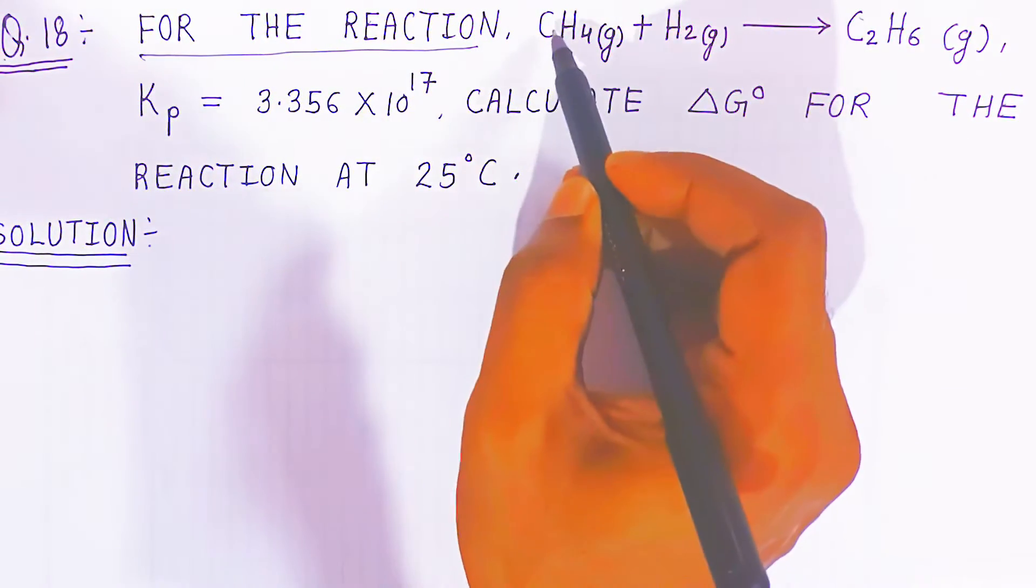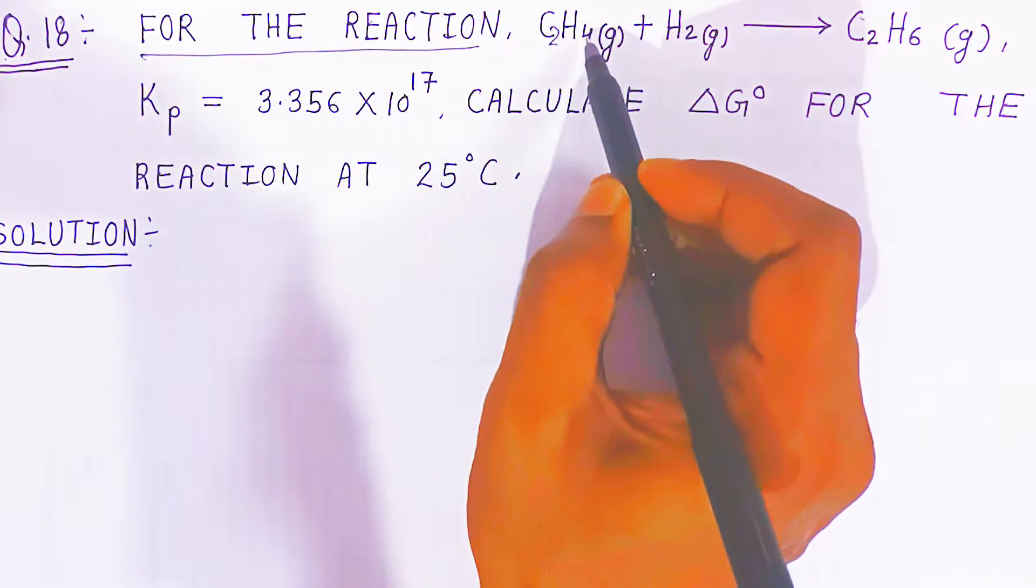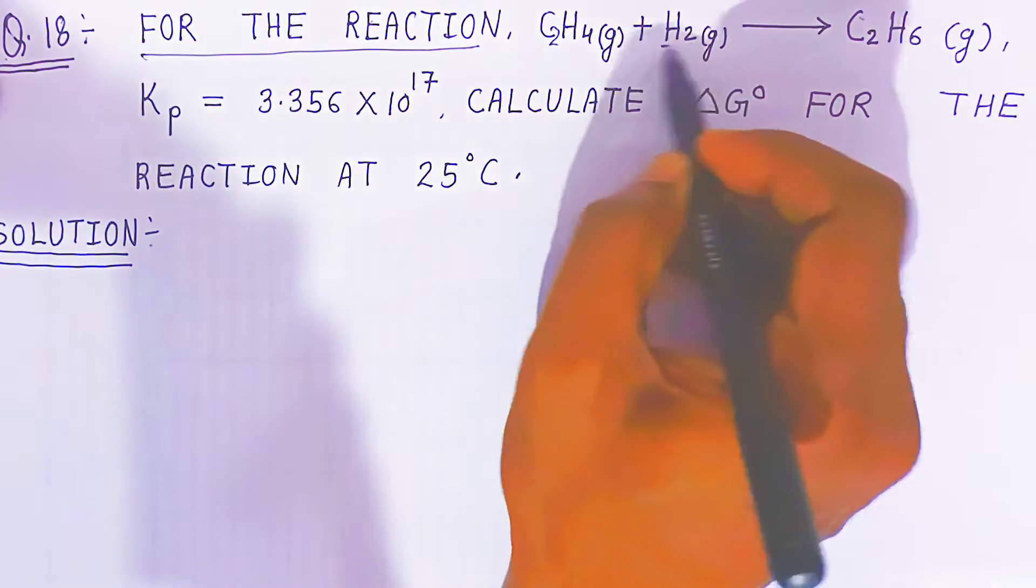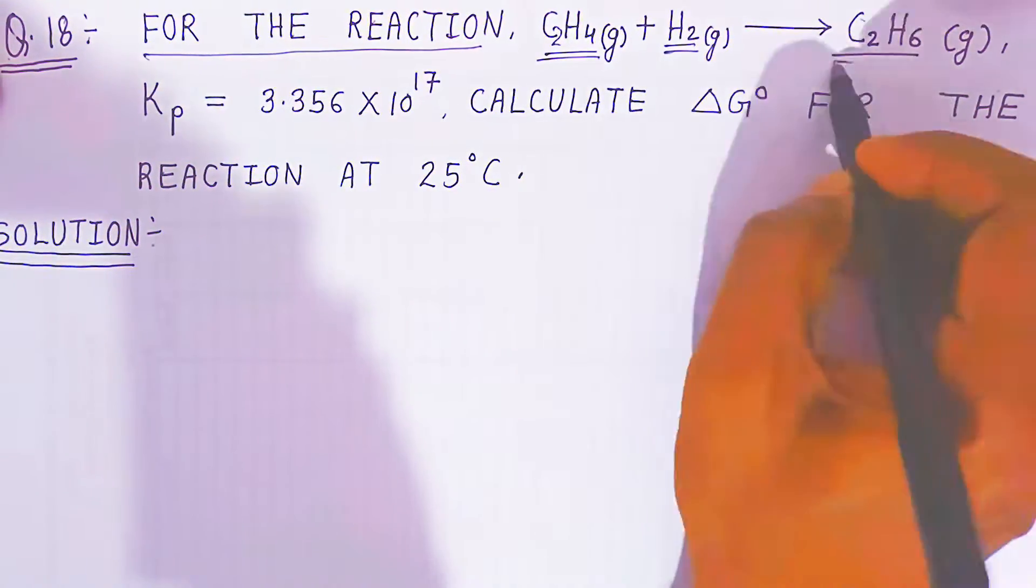For the reaction, C2H4, that is ethene gas, reacts with hydrogen gas. Ethene gas reacts, it will give you ethane.